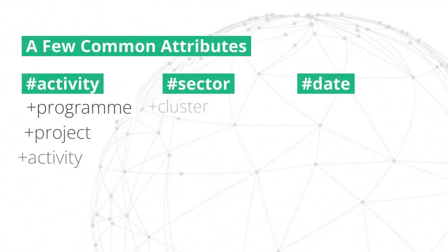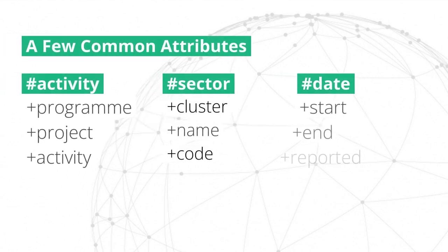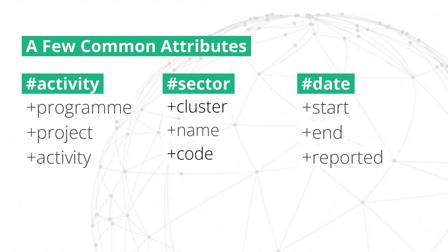A few of the common attributes used to refine the meaning of these hashtags are: program, project, activity, cluster, name, code, start, end, and reported. The meanings of these attributes are self-explanatory, so we will focus on how they can be mixed and matched to describe different types of data.